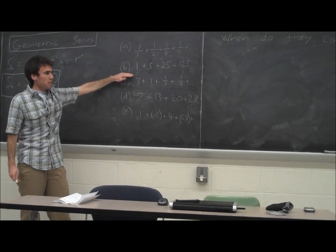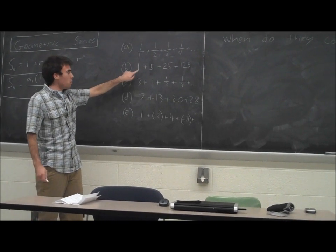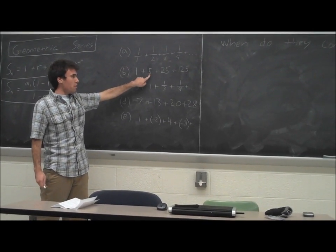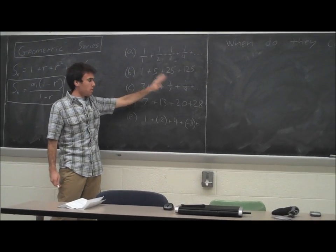We look at B and we say, oh yes, this is exactly what we were talking about. We have 1, we multiply by 5, we get to 5, and we multiply by 5 again to get to 25. It's a sequence.